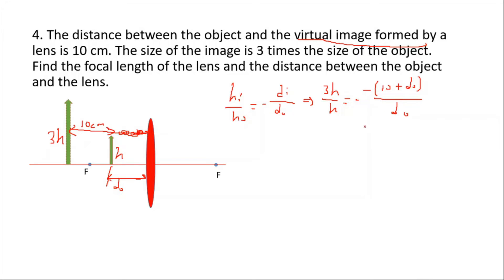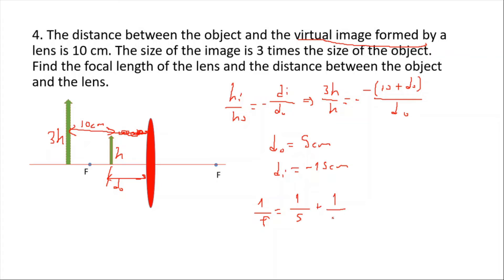After canceling h terms and solving, the object distance equals 5 centimeters. Since the total distance is 10 centimeters, the image distance is 10 + 5 = 15 centimeters, written as negative 15 centimeters. For the focal length: 1/f = 1/5 + 1/(-15). After calculations, f equals 7.5 centimeters.